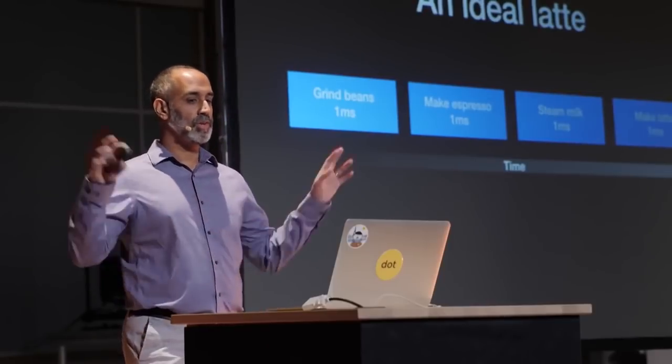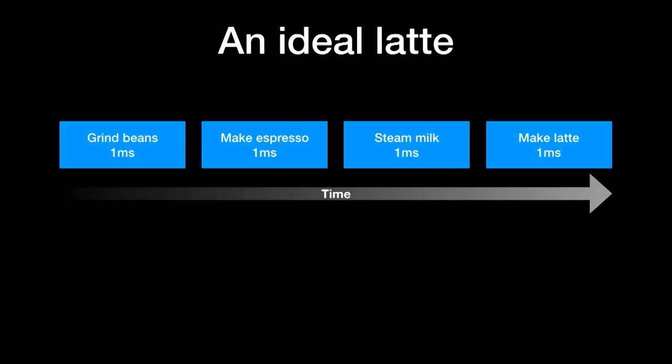Our order-coffee-and-wait function makes a latte. In our simulation, this happens in four steps: step one, grind the coffee beans; step two, make espresso using the grounds; step three, steam the milk; step four, combine the espresso and the milk to make the latte. By default, each of these steps uses CPU for one millisecond — a full CPU burn where nothing else can run on that CPU. So if we do the four steps in sequence, the total time to prepare the latte is four milliseconds.